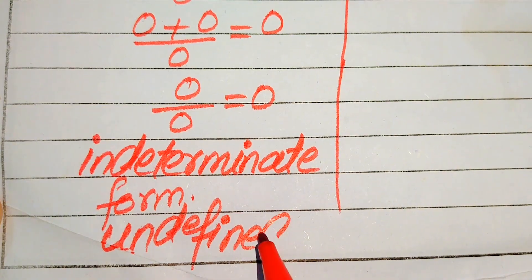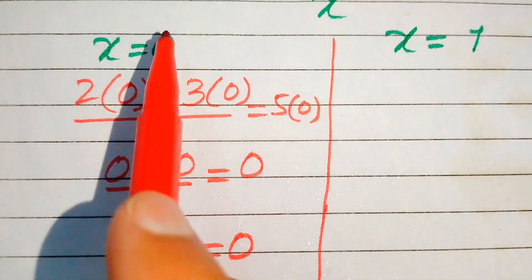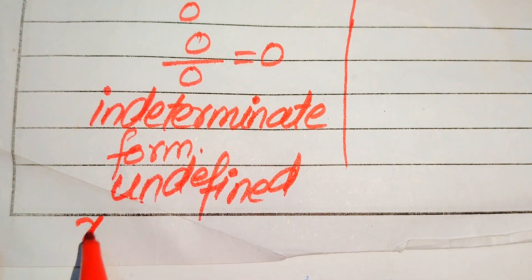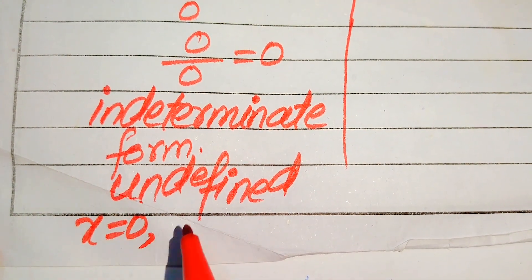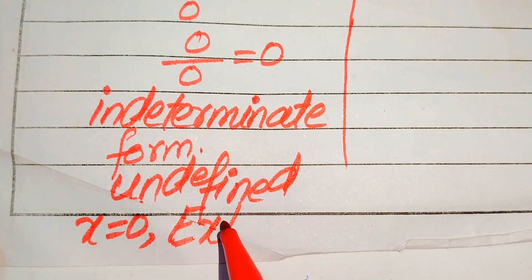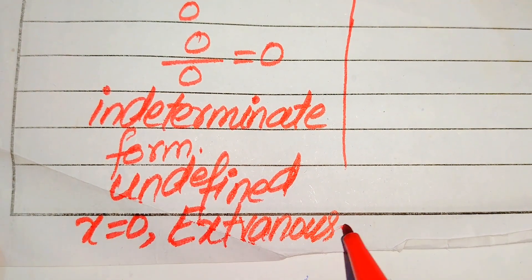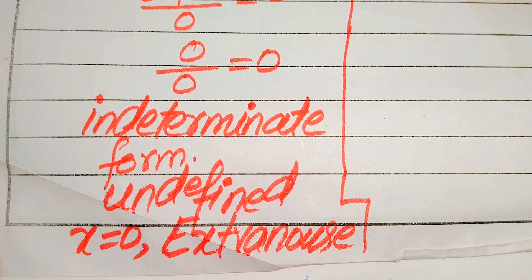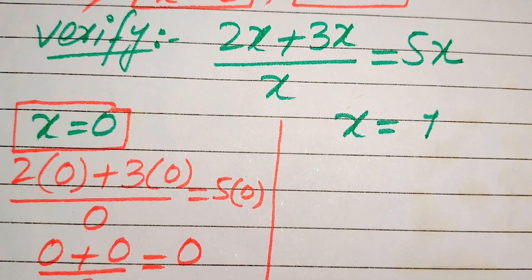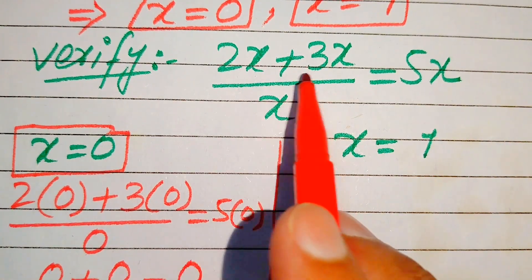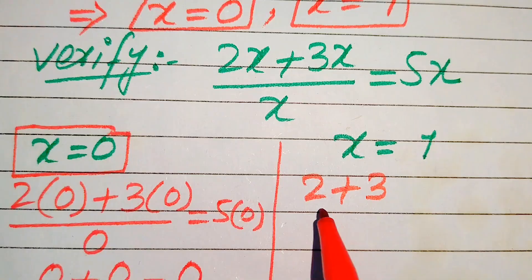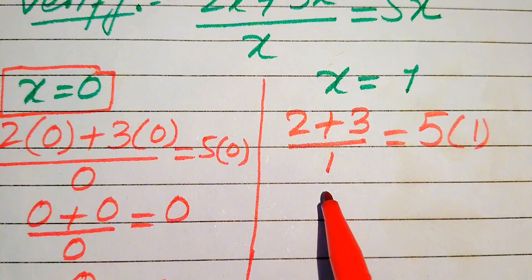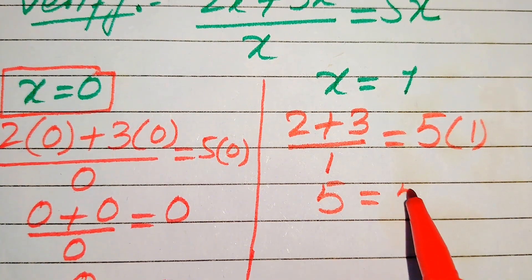If the left-hand side is undefined, this means the value x equals 0 does not satisfy our given question statement. So finally we call x equals 0 an extraneous root of the given equation. Now we move forward to x equals 1: substituting gives 2 plus 3 divided by 1, equals 5 times 1, and 2 plus 3 equals 5, which equals 5.